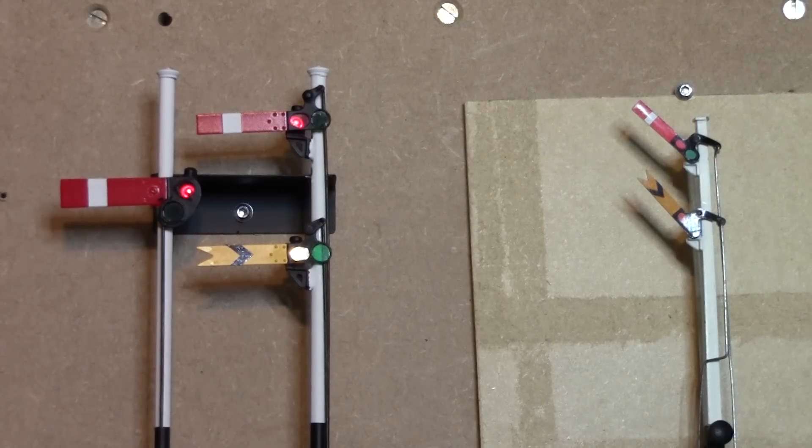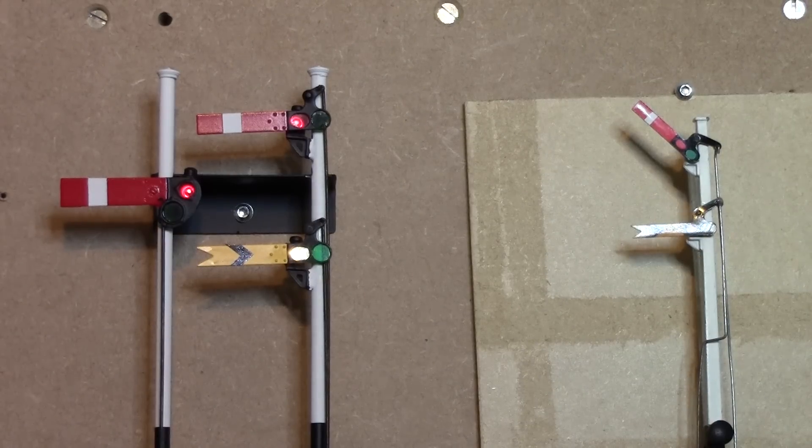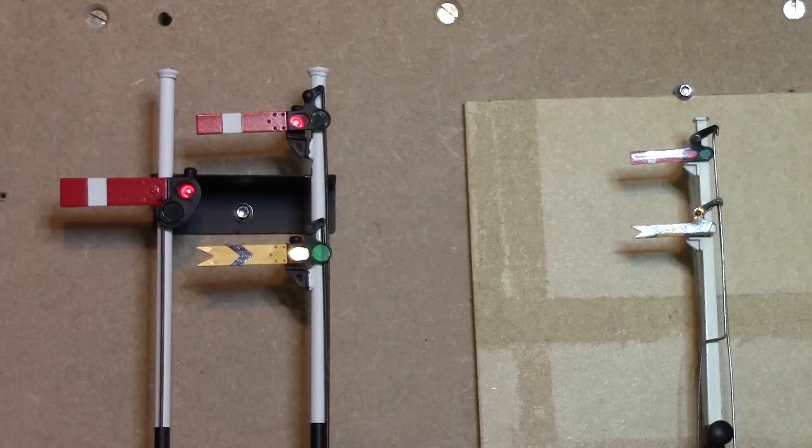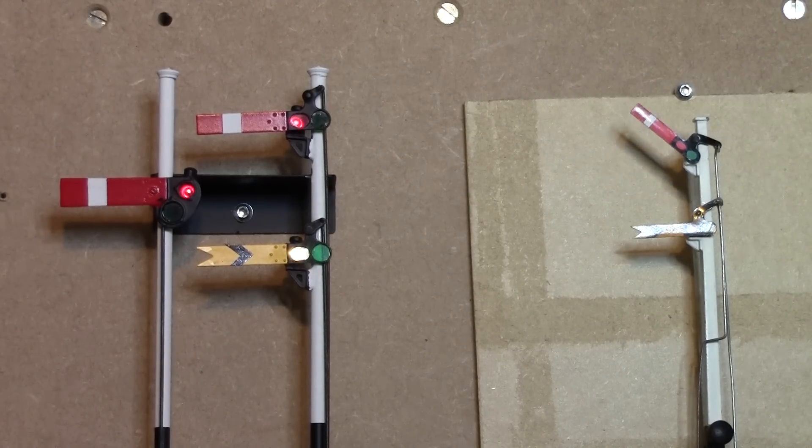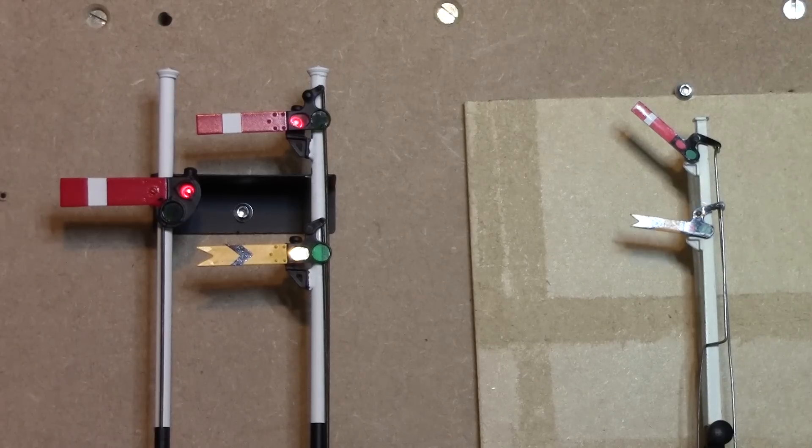And there's a lower quadrant signal. And let's look at the 00 gauge. Distant to clear. Near to clear.